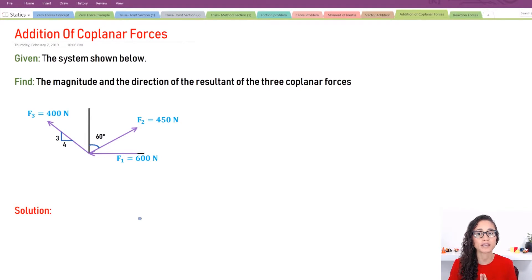So let's first break down the first vector. So we have F1 is equal to 600 newtons, but that one doesn't really have the y components. Only on the x components, it's just going to be F1 and that's in the x direction.